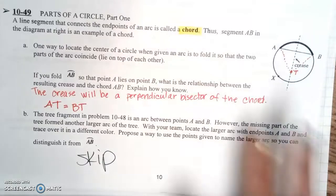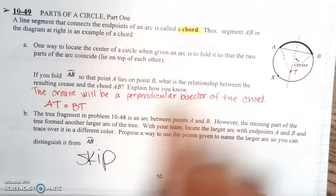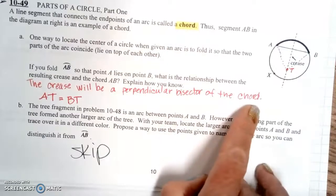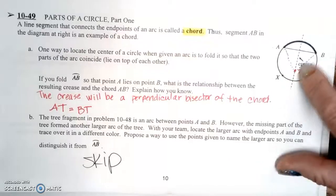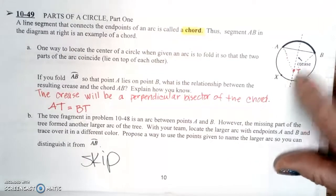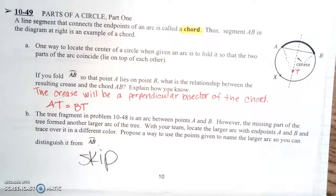If you fold it, you will have this crease right here that will be the perpendicular bisector of the chord, thus making AT congruent to BT. They will match up to each other right there.